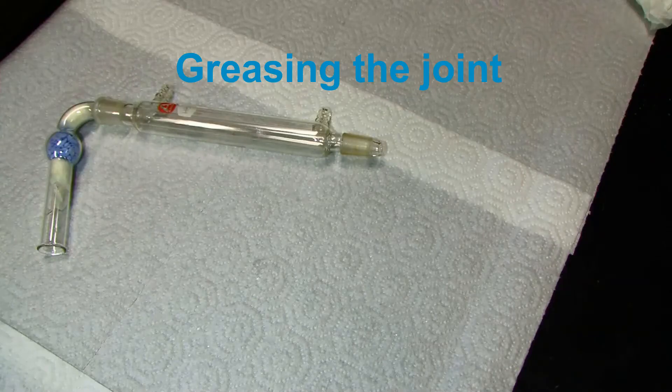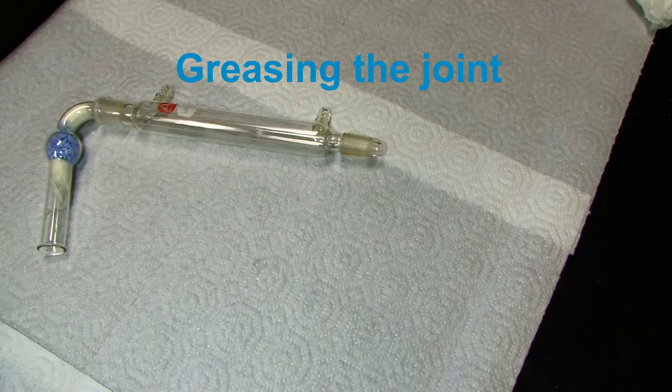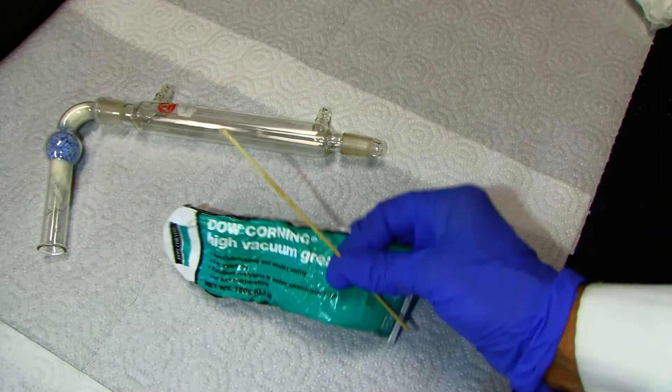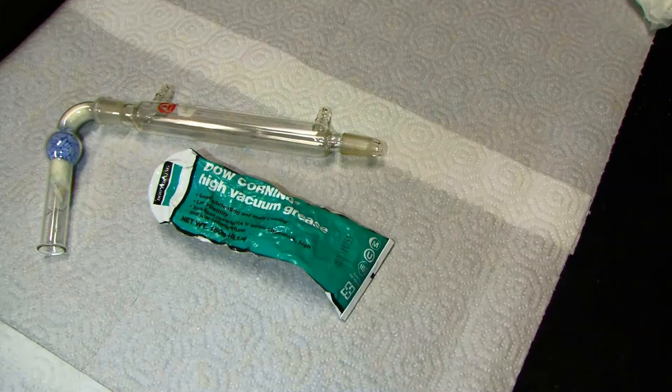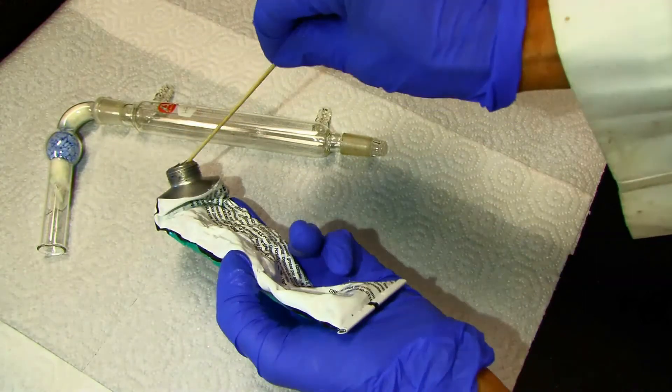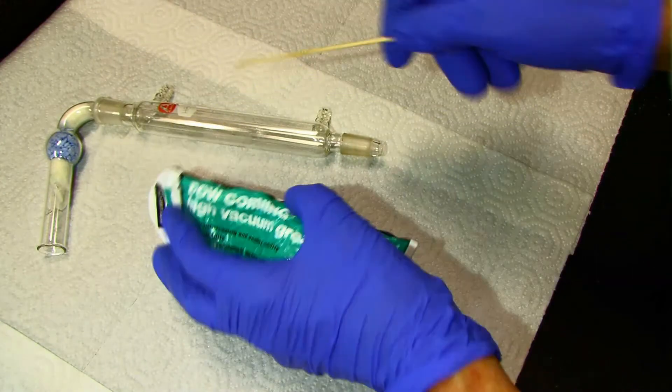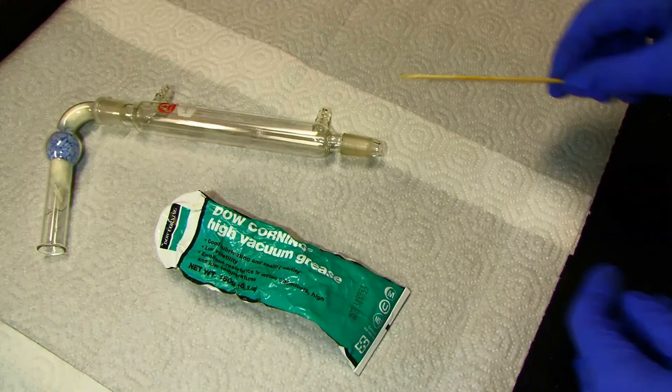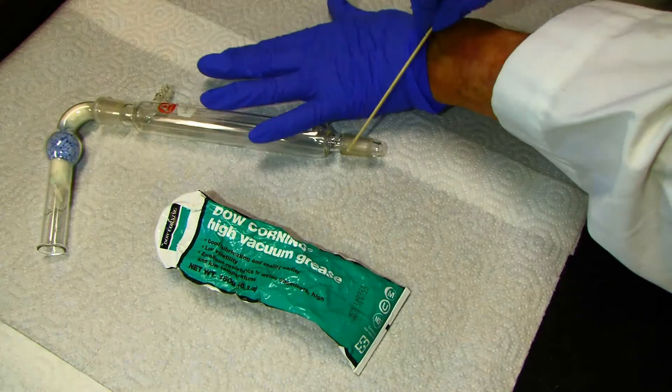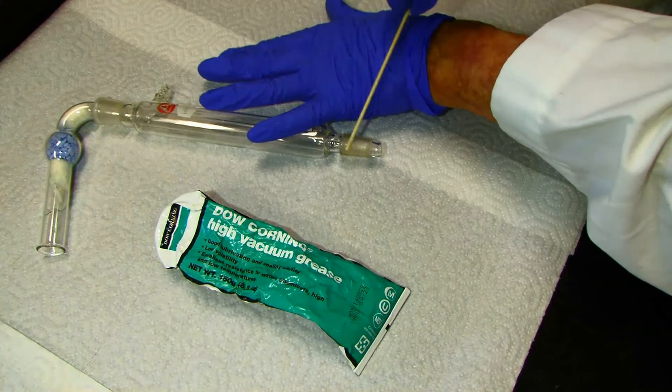After the compounds are added, you need to grease the joint connecting the flask to the condenser. Basically what you're going to do is just take the grease, take a little bit with a stick. You want to do it thin, but pretty much just one stripe down each side.